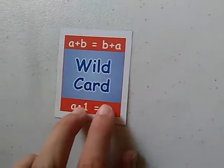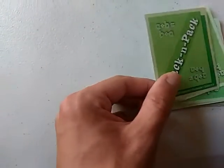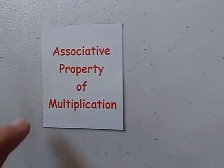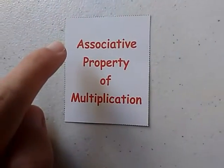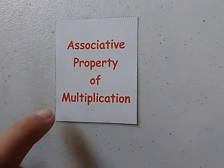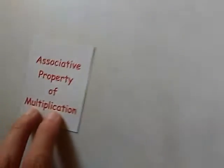Wild Card — we're going to eliminate that card. Wild Card. Associative Property of Multiplication — we have not reached there yet.